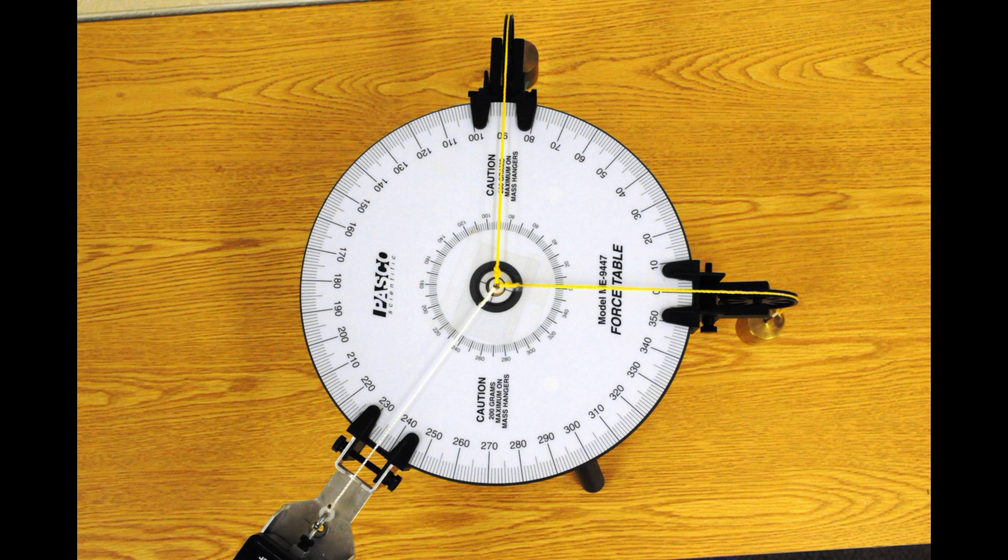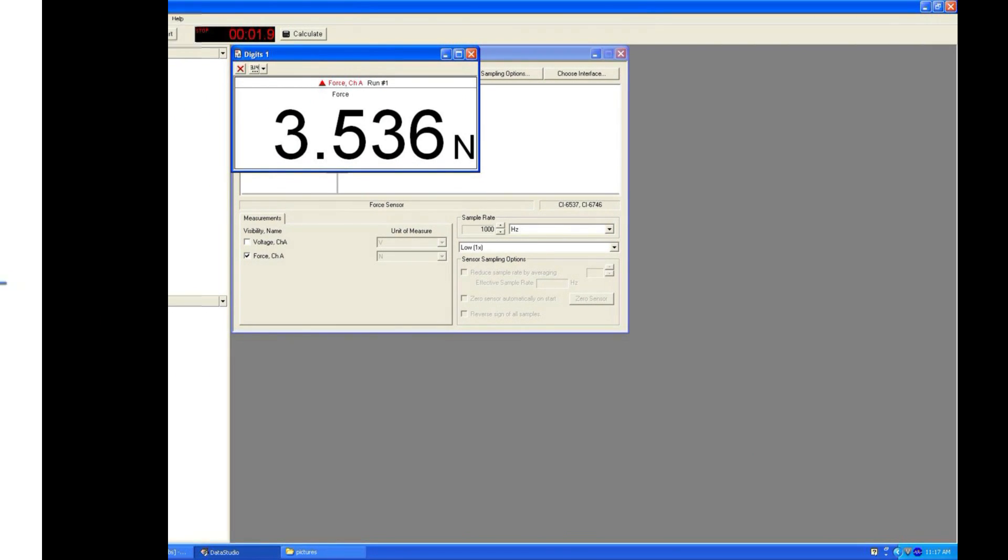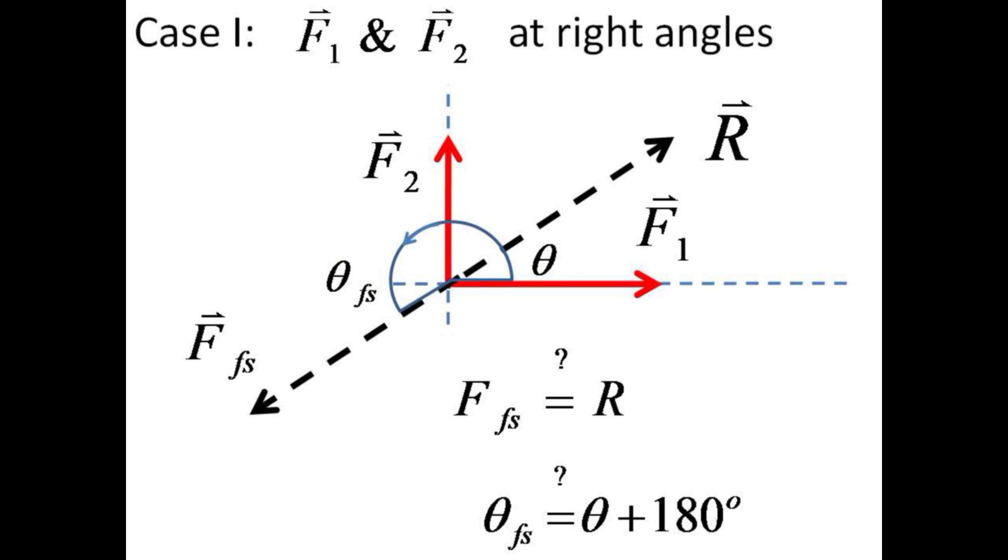Read the angle of the force sensor string. Push the start button to read the magnitude of the tension in the string connected to the force sensor. The force provided by the force sensor string, shown pointing to the lower left, should have a magnitude equal to your prediction for the resultant R using the Pythagorean theorem. Also, the force sensor string angle should be 180 degrees opposite the angle predicted from the resultant of F1 and F2.